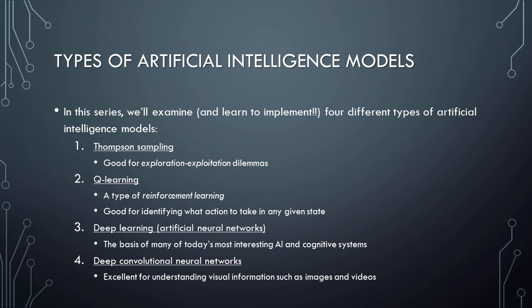Next, we'll learn about Q-learning, which is a type of reinforcement learning. Q-learning systems involve an agent operating in an environment that is characterized by states and possible actions. Q-learning systems can automatically identify an optimal policy that tells either humans or the system itself what action to take for any given state.